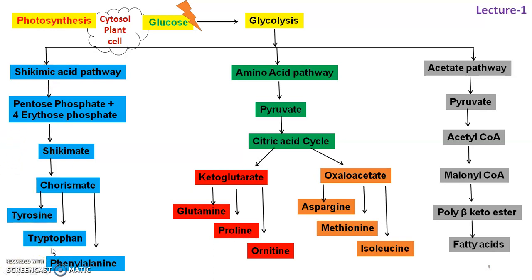All these pathways are processed through enzyme-mediated chemical reactions. Many enzymes such as transferases, lyases, mutases, synthases, and aldolases catalyze these reactions, enabling the plant to synthesize these compounds. Chorismate gives rise to tyrosine, tryptophan, and phenylalanine — the three basic aromatic amino acids, which are still primary metabolites. Similarly, the amino acid pathway involves pyruvate, oxaloacetate, and ketoglutarate, which yield aliphatic amino acids. The acetate pathway gives rise to pyruvate, acetyl-CoA, malonyl-CoA, and fatty acids.